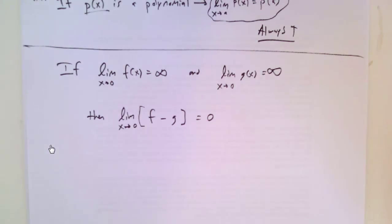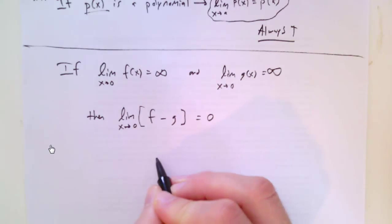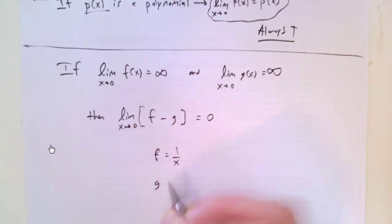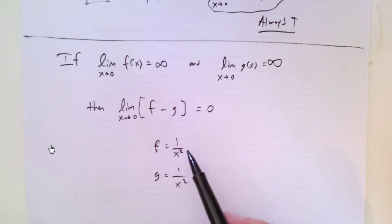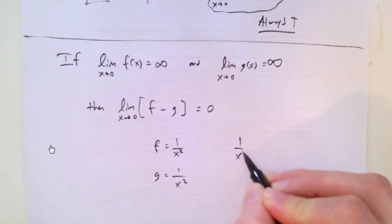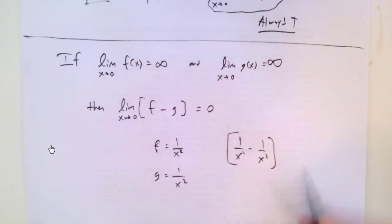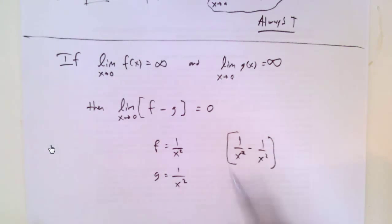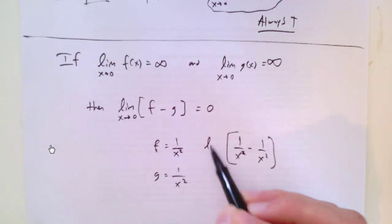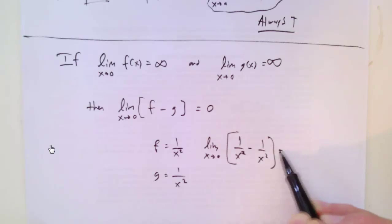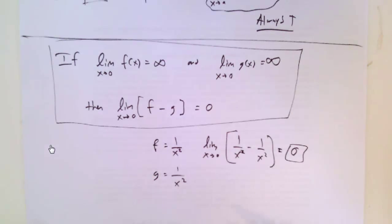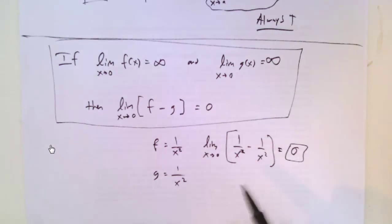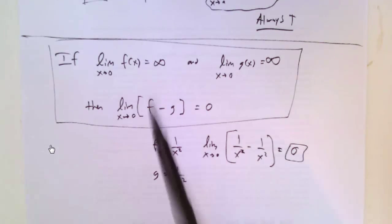This is sometimes true. Let's look at two examples. Say F equals 1 over X squared, and G equals 1 over X squared. For each of these functions, the limit as X goes to 0 approaches infinity. When I subtract them, I get 1 over X squared minus 1 over X squared. Using the equivalent function theorem, this is equivalent to the function 0, so the limit as X approaches 0 is 0, as claimed. That's one pair of functions for which it's true.